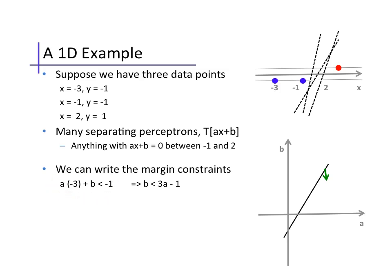Rearranging these constraints, we have that the point at minus 3 constrains our parameter b to lie below this line. Our second point, at minus 1, to lie below this line.